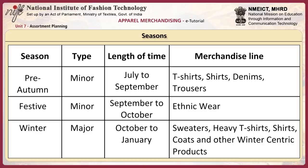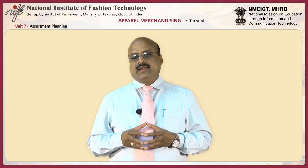For the festive season — a minor season — during September and October, the merchandise line is mainly ethnic. For the winter season — a major season — from October to January, the merchandise line includes sweaters, heavy T-shirts, shirts, coats, and other winter-centric products. You have come to the end of this unit.